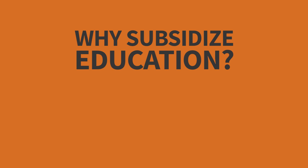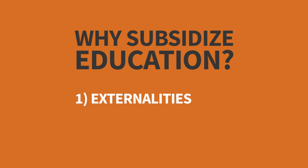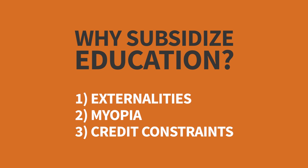There are three standard arguments as to why education should be treated differently than markets for toaster ovens or other standard goods and services. They're under the labels of externalities, myopia, and credit constraints. I'll talk about each of these.